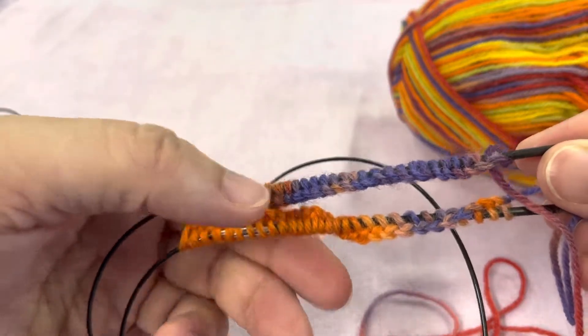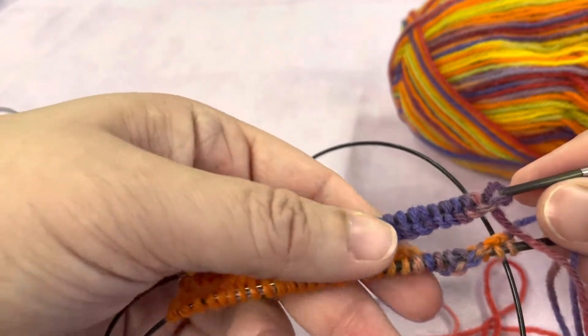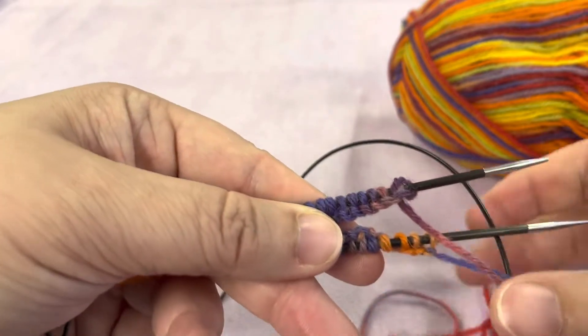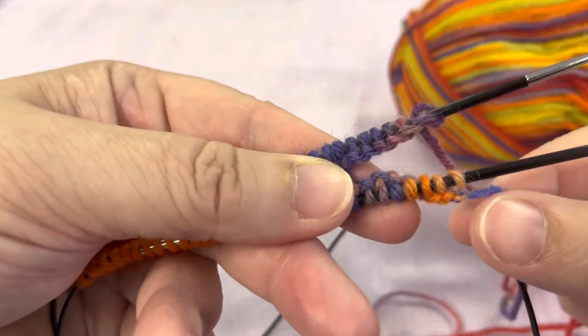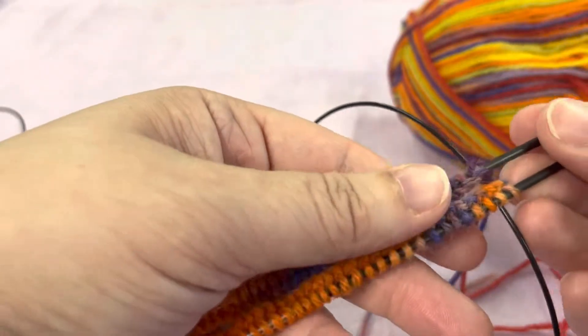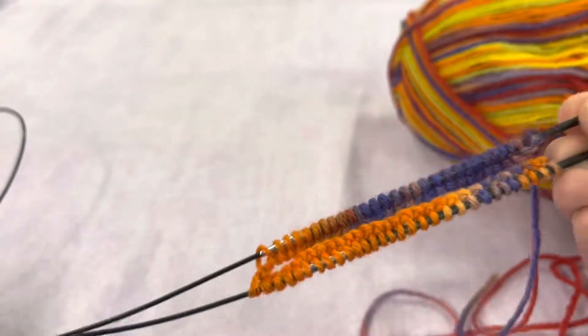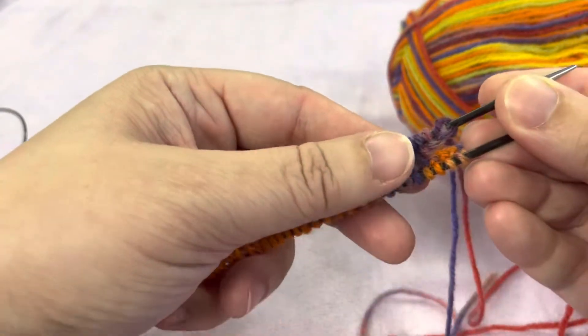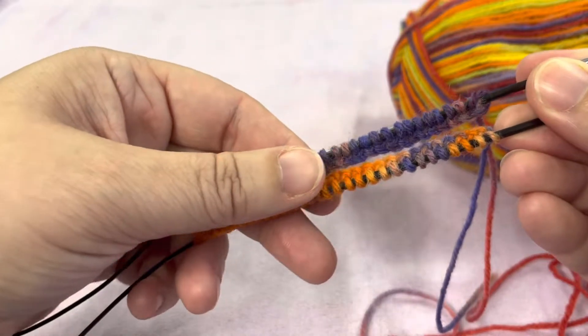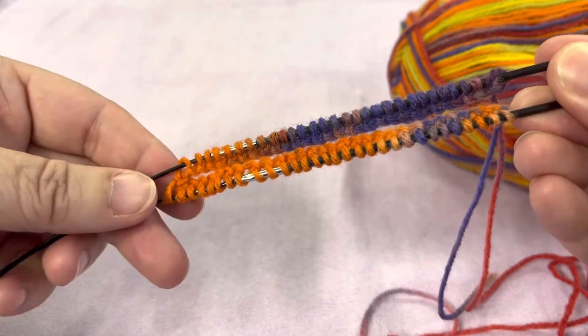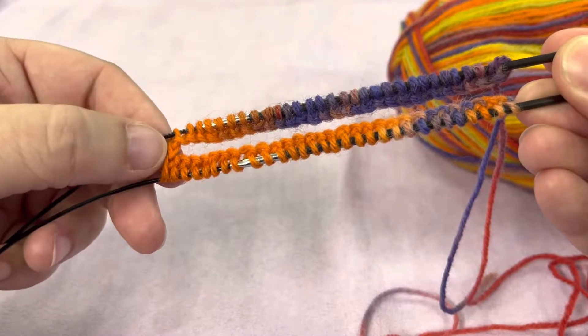You've got it nice and neat just like that. And then we want to turn all of our stitches to the inside of those two needles that way we know there's no twist in them. So I'm just going to carefully bring them around and move that over so it's not in the way.